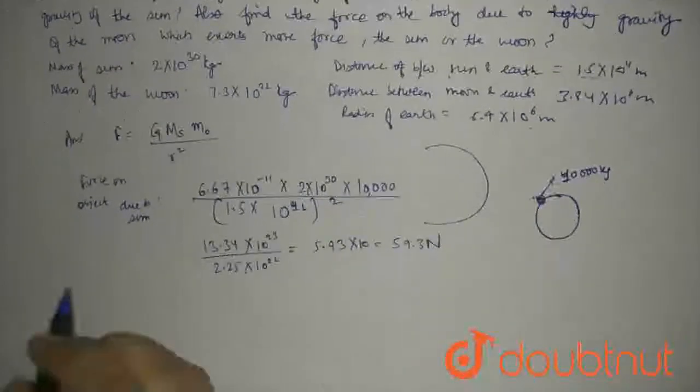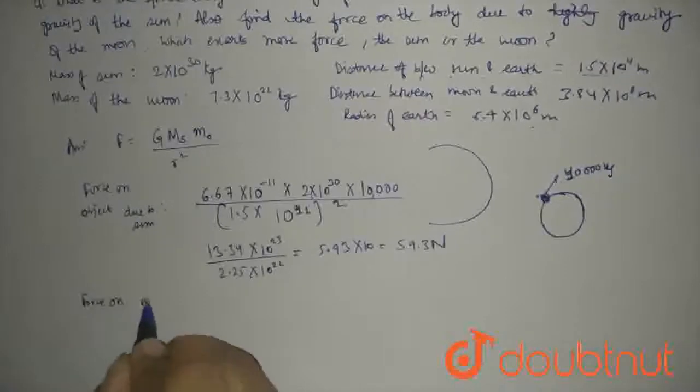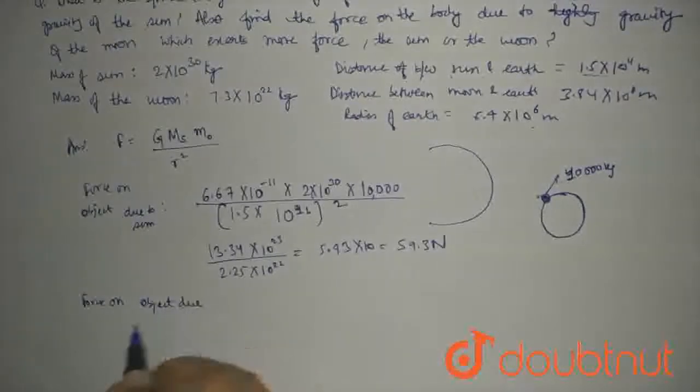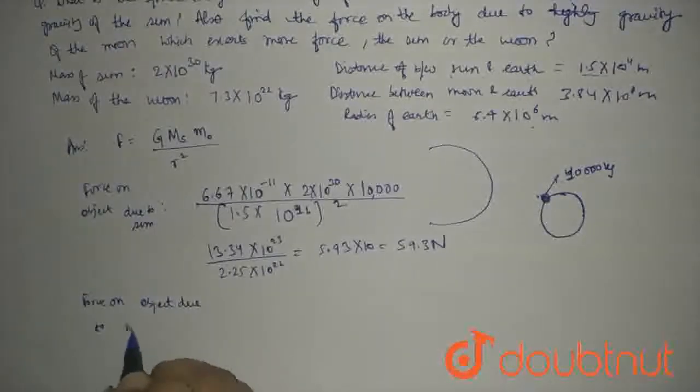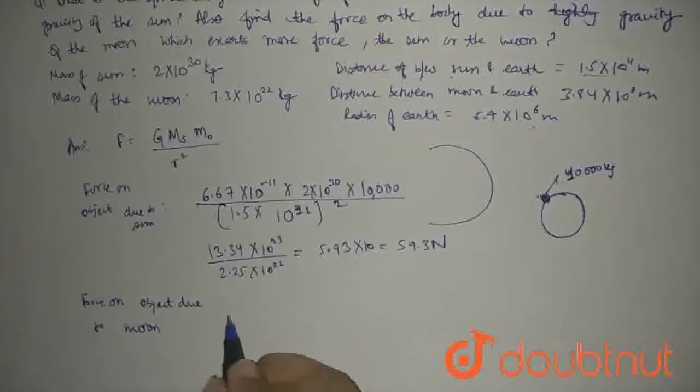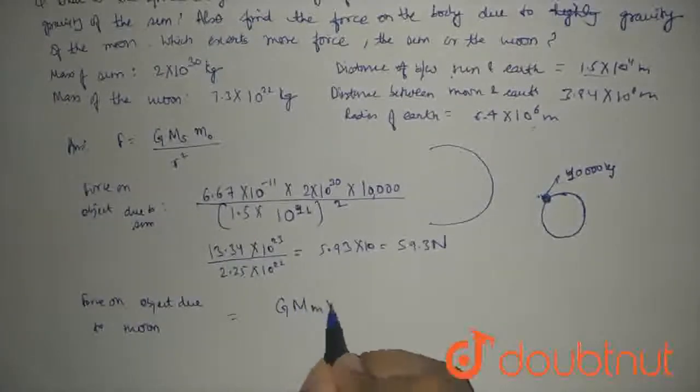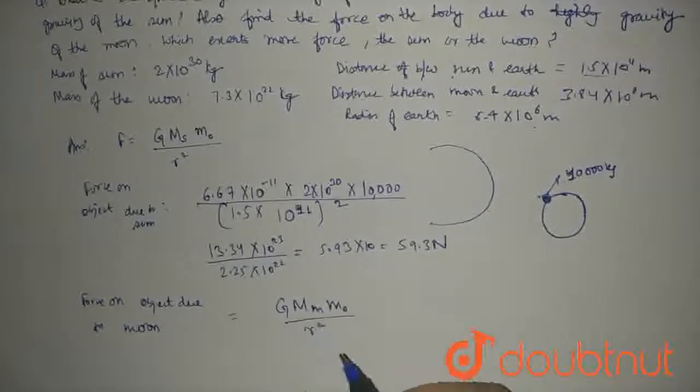Now, let's look at the force on object due to moon. G times mass of moon times mass of object divided by r squared.